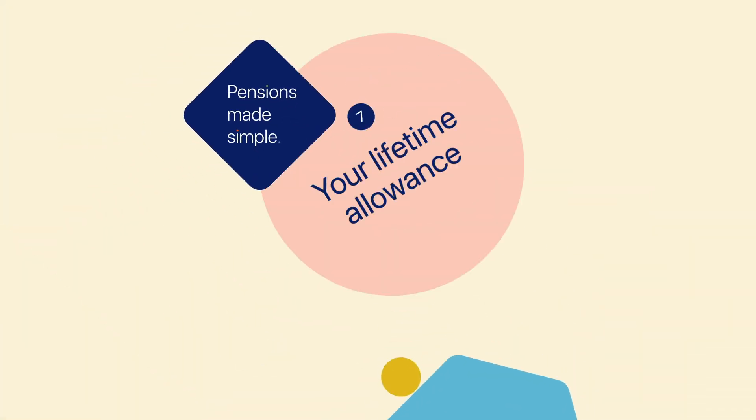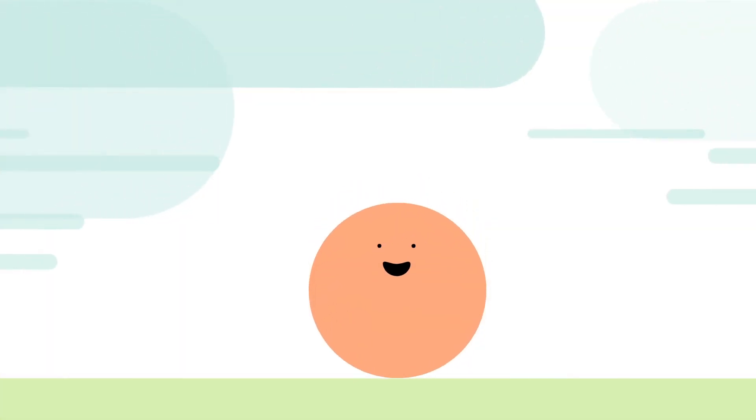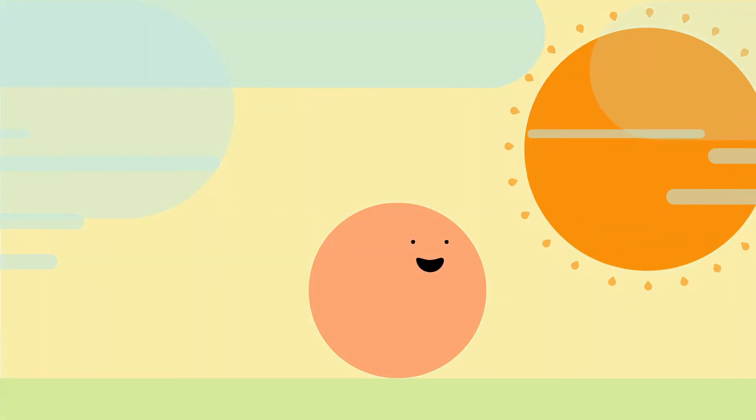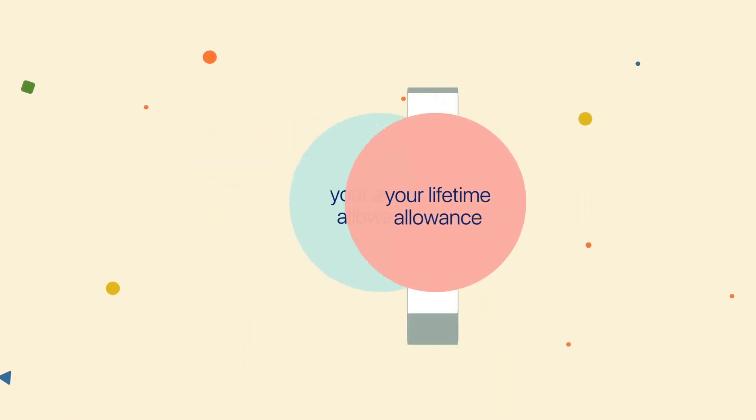Pensions Made Simple: Your lifetime allowance. A pension is a tax-efficient way to save for life after work. However, the government sets limits on the amount of pension you can build up before you have to pay extra tax. This video explains your lifetime allowance.